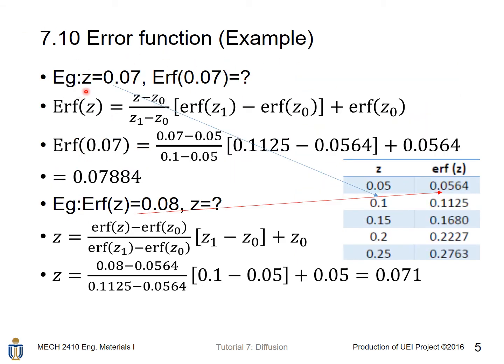For example, if z is equal to 0.07, what is the error function value for z equal to 0.07? erf(z) equals (z - z0)/(z1 - z0) times [erf(z1) - erf(z0)] plus erf(z0). Just plug in the value for 0.07. erf(z1) and z0 can be found from the table here. z1 is defined as the z entry just bigger than the z we want to find. z0 is defined as the z entry just smaller than the z we want to find. Then we get the following equations, calculate it, and get this value.